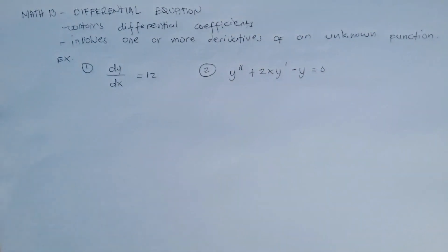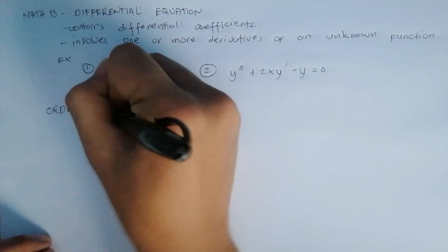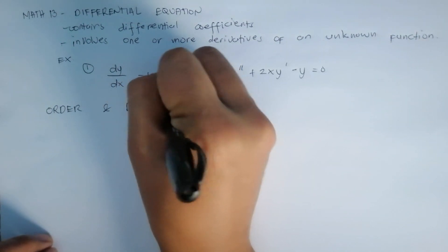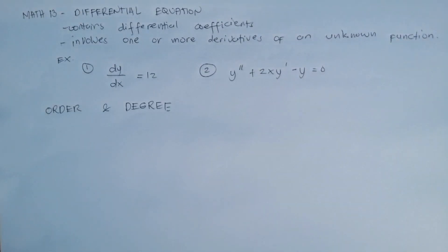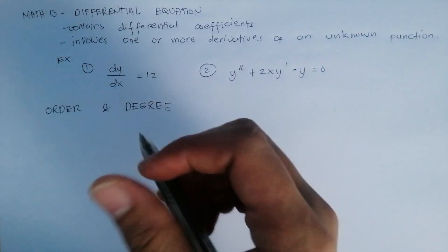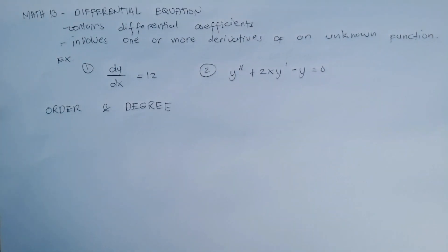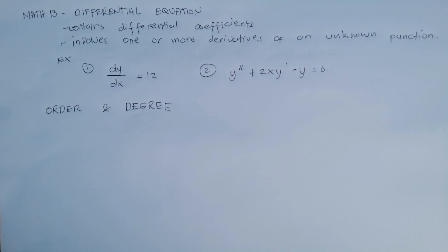So that's the example of a differential equation. For the order and degree: the order is equal to the order of the highest differential coefficient that the equation contains. Before we identify the equation, we need to familiarize ourselves with the given equation. For the degree, it is the highest power of the highest order differential coefficient that the equation contains after it has been rationalized.